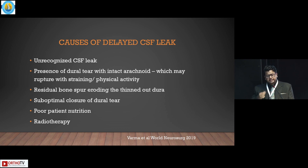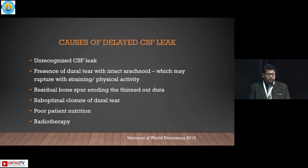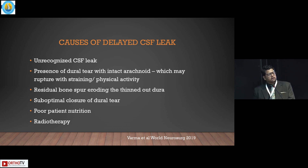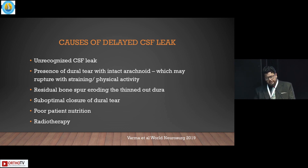The causes of delayed CSF leak — this is again a rare problem. CSF leaks which happen more than 5 to 6 days after the primary surgery are classified as delayed CSF leaks, and you can have delayed CSF leak up to about 3 months from the time of the primary surgery. You can have an unrecognized leak at the time of surgery where the arachnoid was intact, so there was no CSF outpouching, but after a period the patient started straining, walking, and physical activity caused the arachnoid to rupture, leading to CSF leak. Sometimes residual bone spurs erode the thinned-out dura — since the dura is a pulsatile structure, it can hit against a bony spur causing a CSF leak.